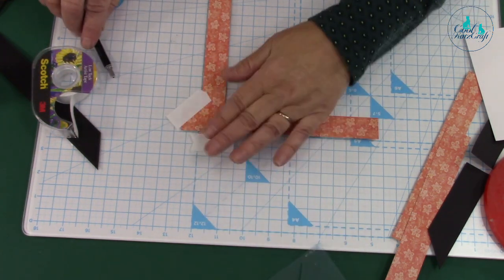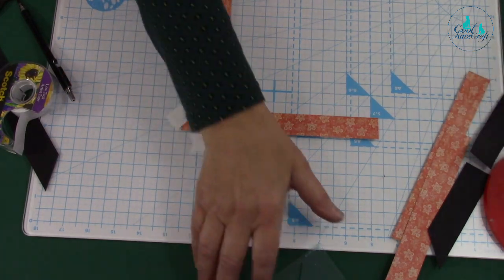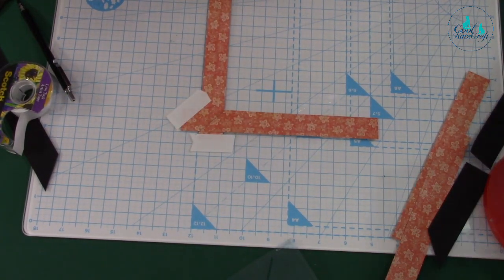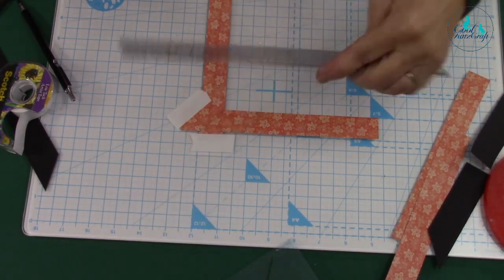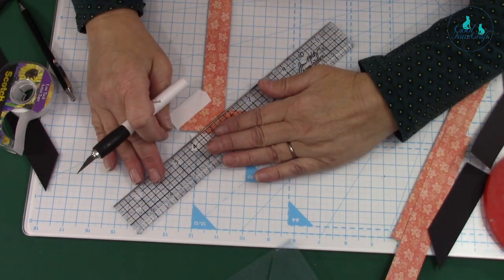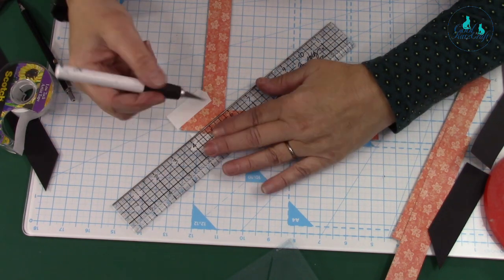I'm going to put my craft knife. My ruler has disappeared, it's here. I'm going to cut that across there.